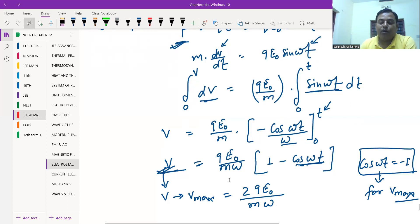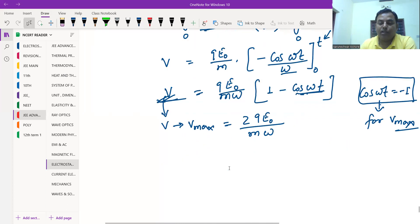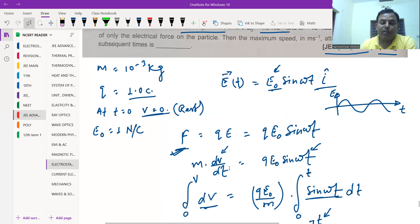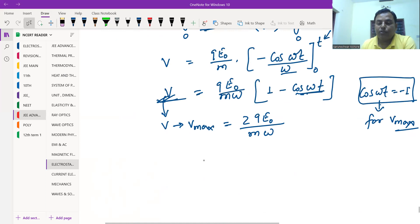Maximum velocity v_max = (qE₀/mω) × 2. The q value is 1 coulomb, E₀ is 1 N/C, mass is 10⁻³ kg, and ω is 10³ rad/s. So v_max = 2 × 1 × 1 / (10⁻³ × 10³) = 2 × 1 / 1 = 2 m/s.